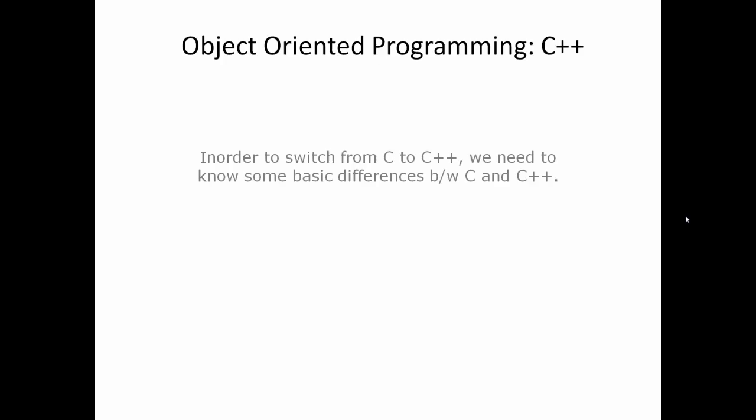Let's start with object oriented programming language, that is C++. To switch from C to C++, we need to know some of the basic differences and similarities between C and C++. Most of the things are similar, but small differences make a huge impact, and thus we need to study C++ to understand the object oriented approach to programming. So let's get started.